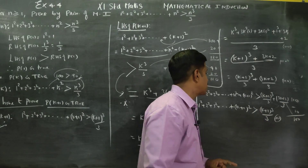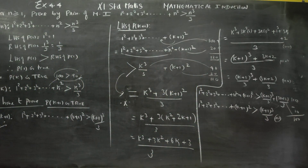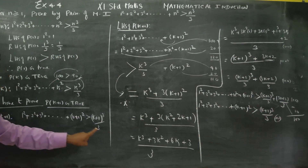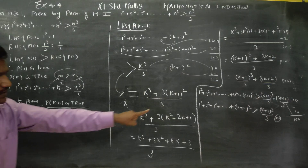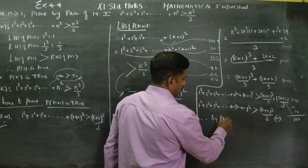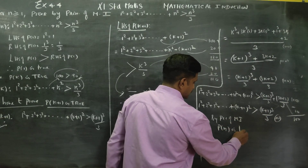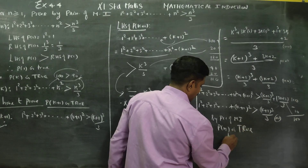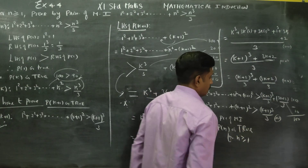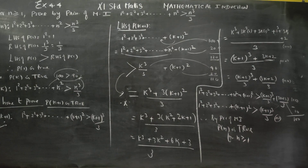We started with LHS and proved that RHS is k plus 1 whole cube by 3. Therefore, by the principle of mathematical induction, P of n is true for all n greater than or equal to 1. The concept is very easy to use. Thank you.